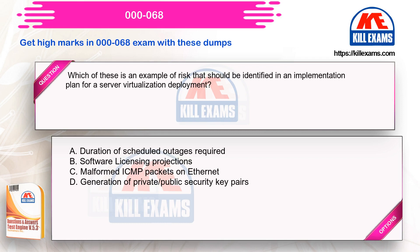Option A: Duration of scheduled outage is required. Option B: Software licensing projections. Option C: Malformed ICMP packets on Ethernet. Option D: Generation of private/public security key pairs.